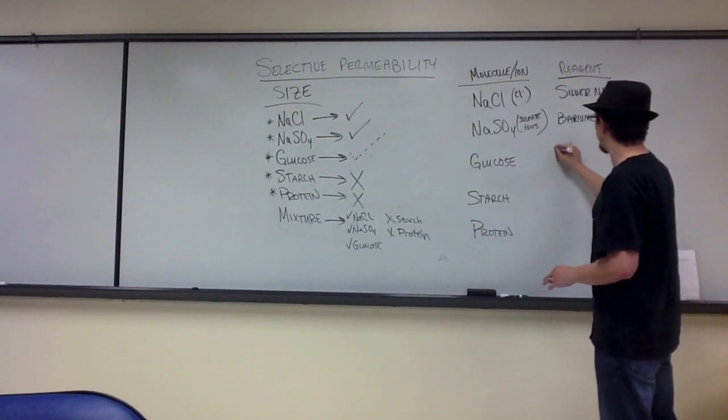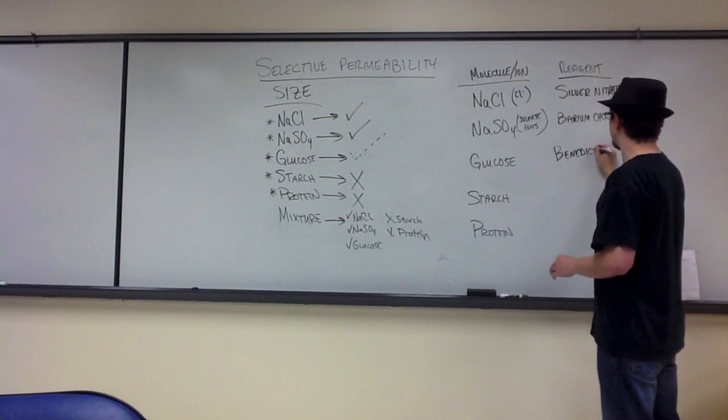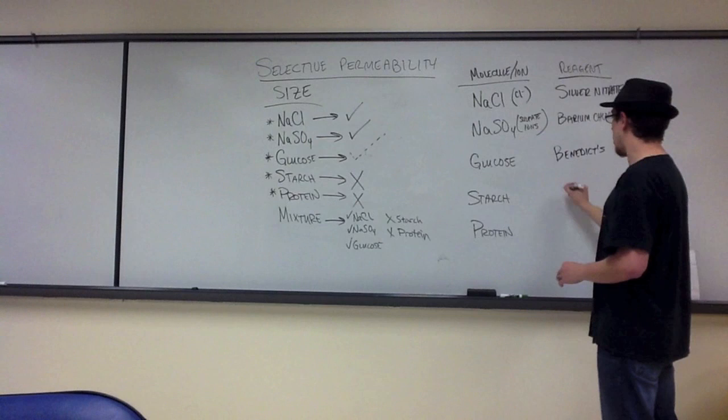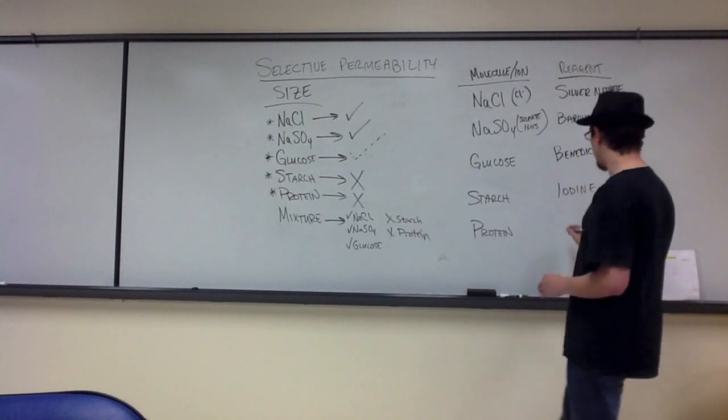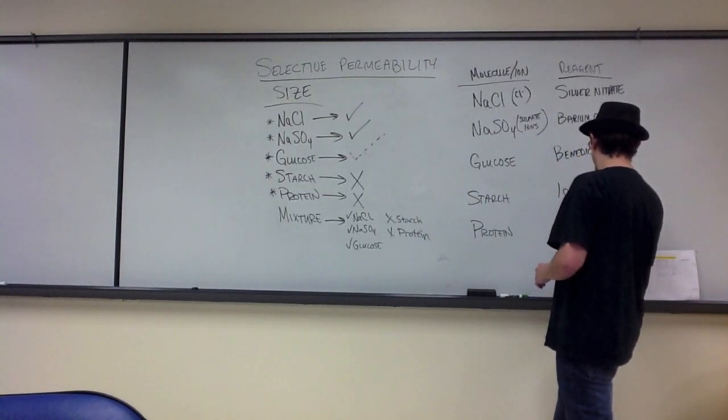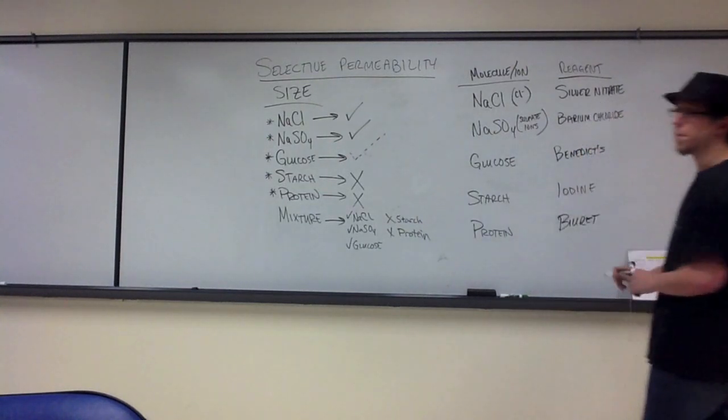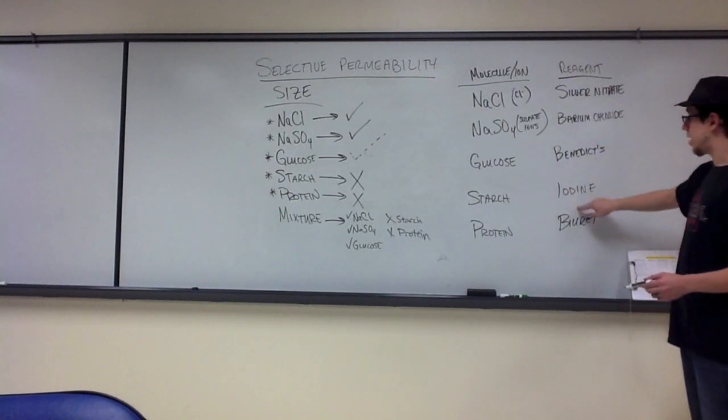For glucose, you've done this before. You're going to use benedicts. For starch, hopefully you're familiar with these, you're going to use iodine. And for protein to detect those peptide bonds, you're going to use biuride. So silver nitrate, barium chloride, benedicts, iodine, and biuride.